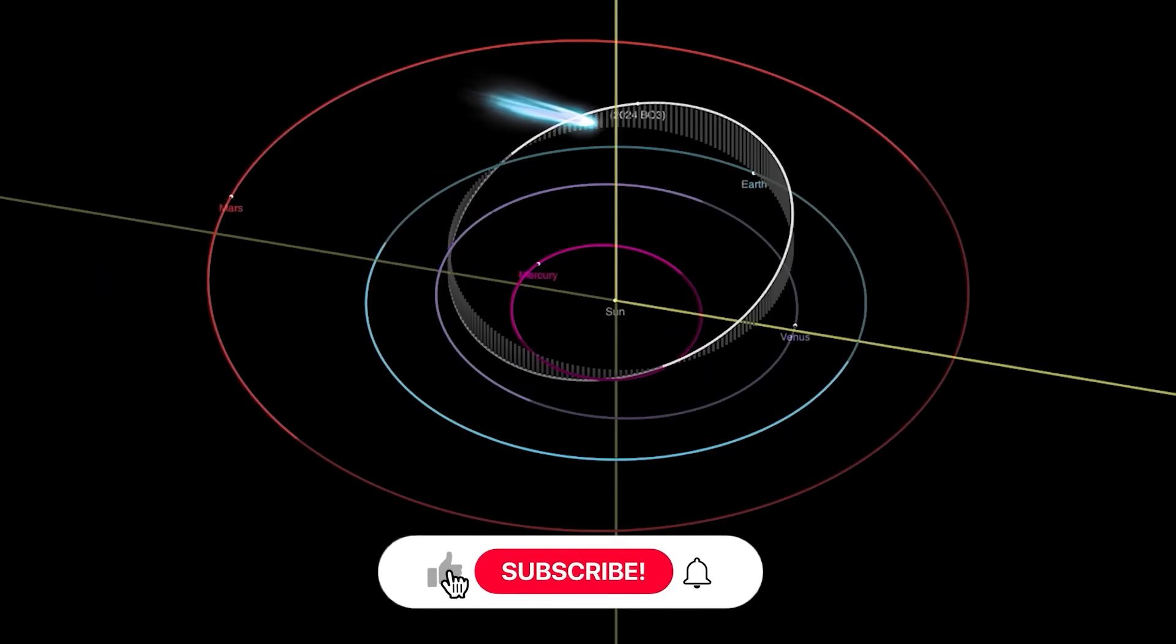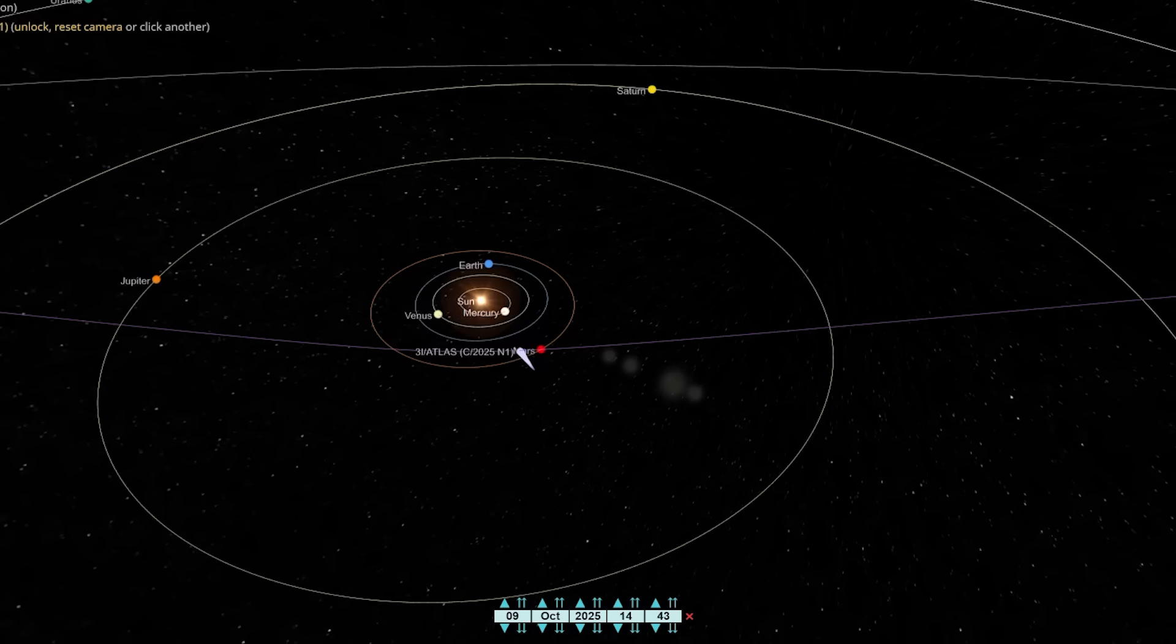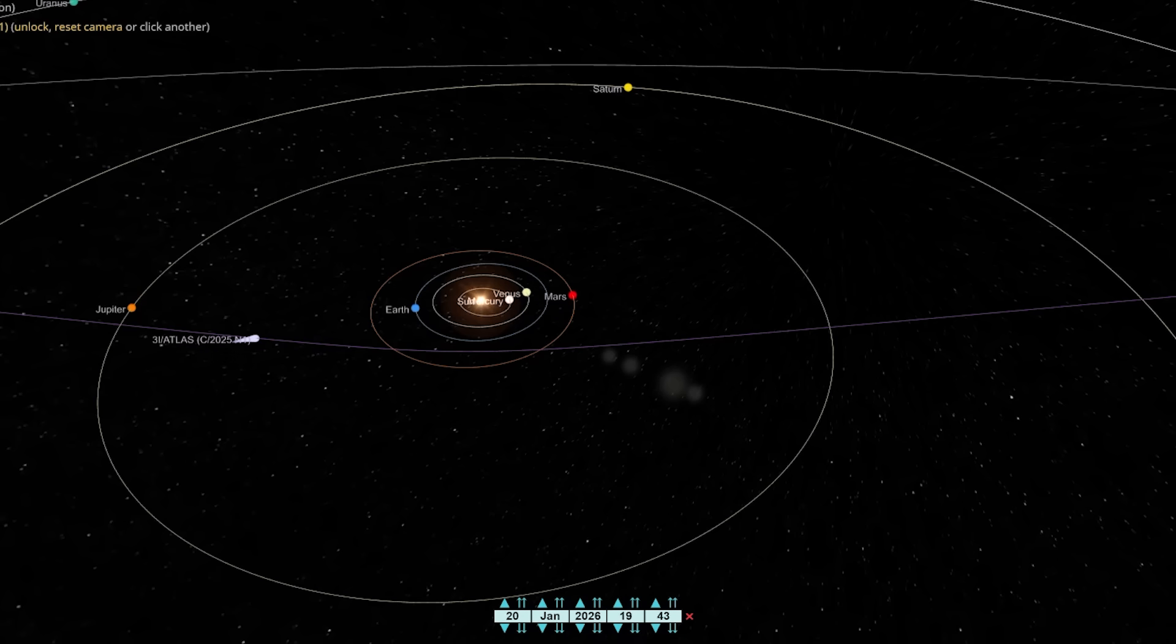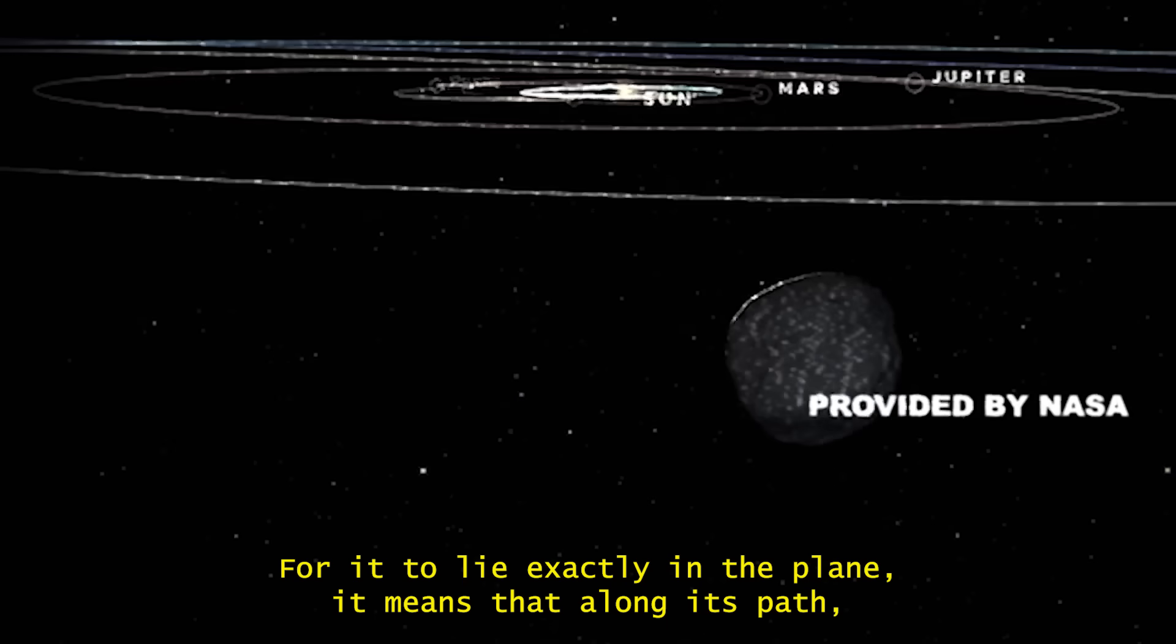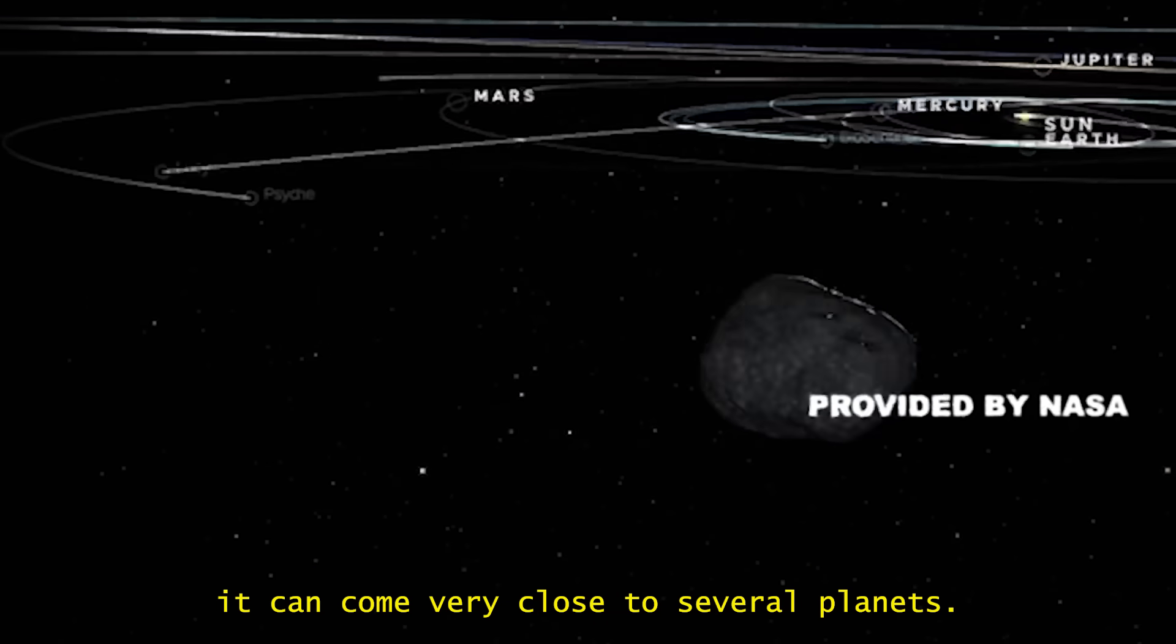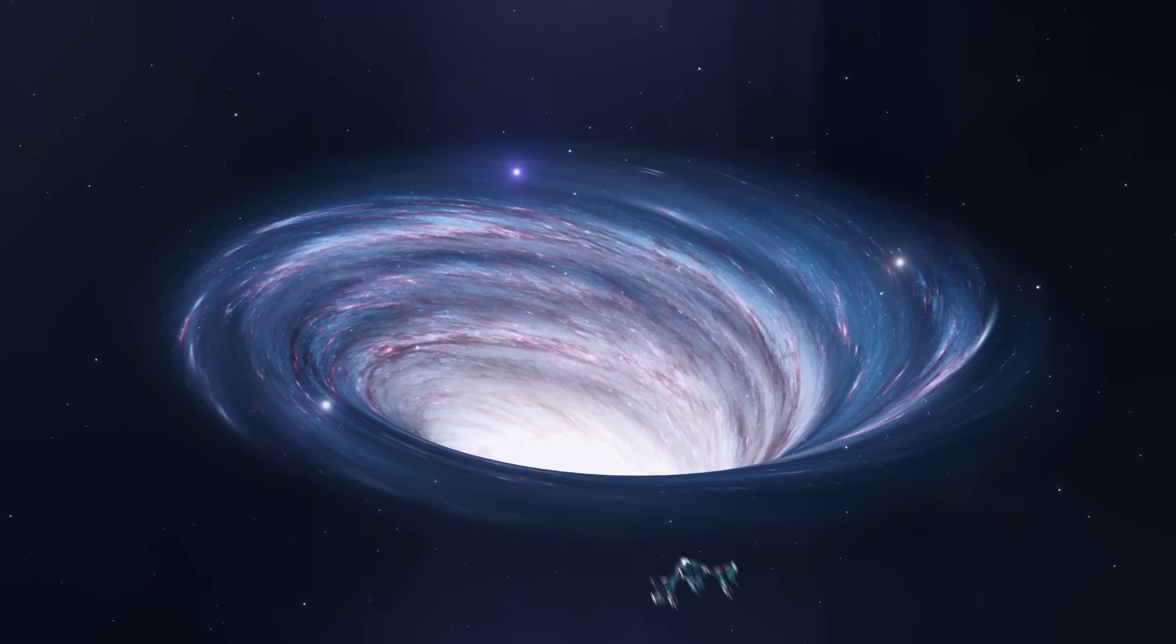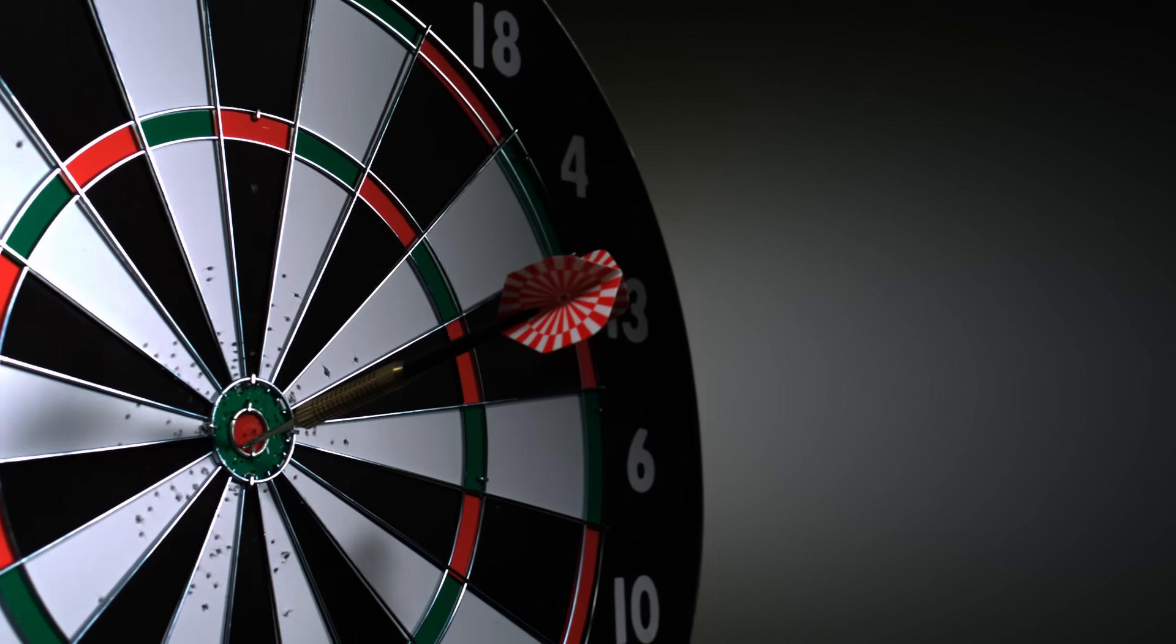Buried in the trajectory calculations is a sequence that probability theory says shouldn't emerge from random gravitational interactions. The alignment was merely the opening chapter. It passed within 18.6 million miles of Mars precisely when ESA's orbiters achieved optimal observation geometry. Weeks later, Venus positioned at the ideal angle for Earth-based instruments. Then Jupiter aligned for a potential gravitational deflection toward perihelion. One trajectory analyst called it surgical timing. For it to lie exactly in the plane, it means that along its path, it can come very close to several planets. In fact, it comes very close to Mars, Venus and Jupiter. Odds of this sequence occurring by chance? Less than 1 in 10,000.